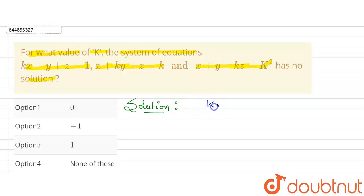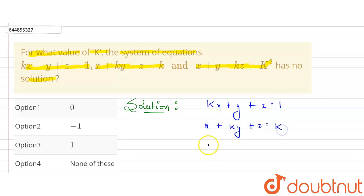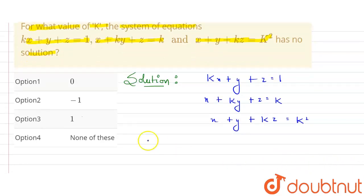Let's write the three equations: kx + y + z = 1, x + ky + z = k, and x + y + kz = k². Now if we write these equations in terms of matrix form...